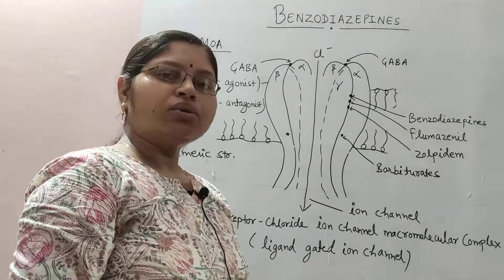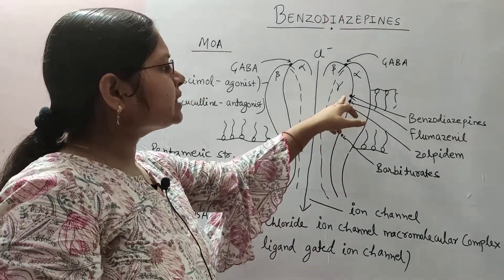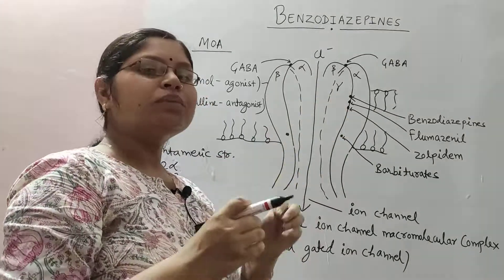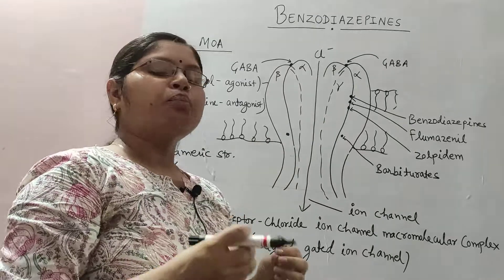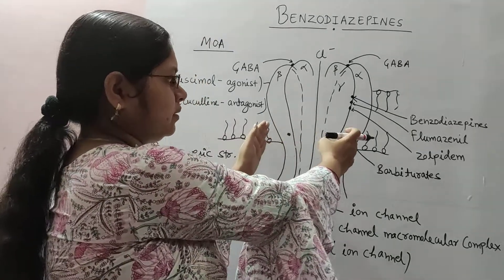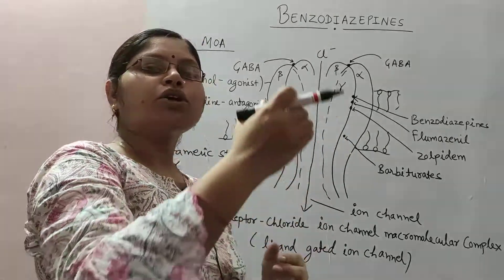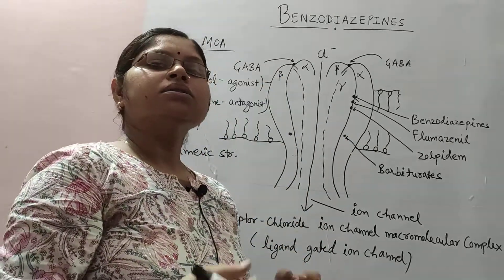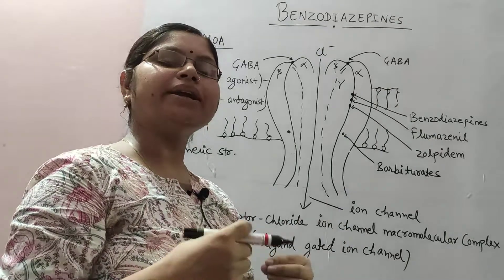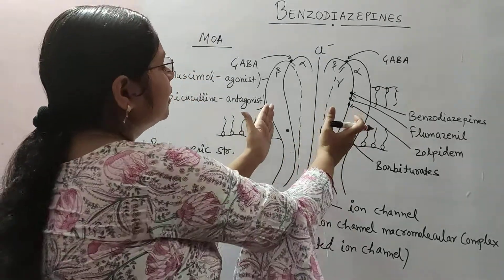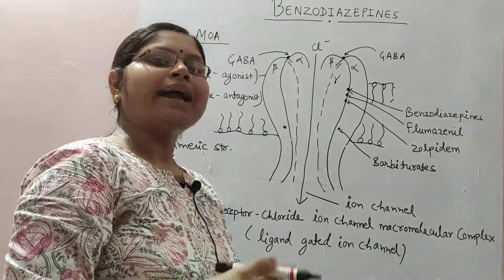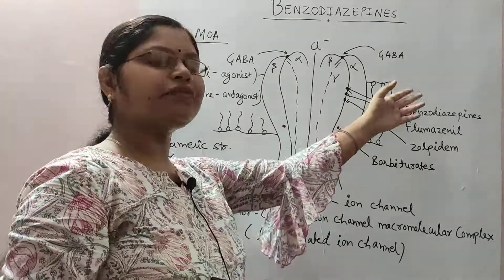Flumazenil is the antagonist for benzodiazepines, and its binding site is just below the benzodiazepine binding site. Flumazenil is used in benzodiazepine poisoning: when chloride ion channel opening time is very high and chloride influx is excessive, leading to very high muscle relaxation, Flumazenil is given as an antagonist. It decreases the size of the pore, thereby decreasing chloride influx and antagonizing the effect of benzodiazepines.